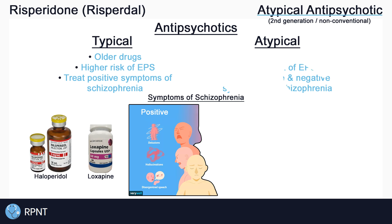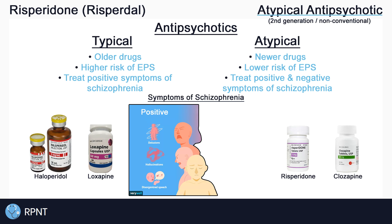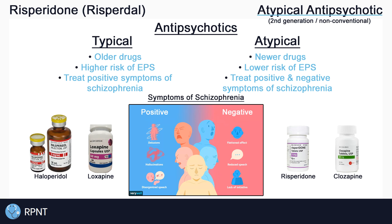Atypical antipsychotics, like Risperidone, are the newer and generally safer option that show fewer extrapyramidal symptoms. They are also used in the treatment of psychosis and behavioral problems, and can treat both positive and negative symptoms of schizophrenia. Negative symptoms are things that are taken away from regular behaviors, such as apathy or having a flat affect.